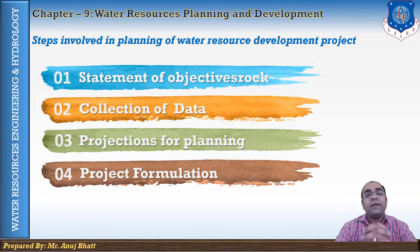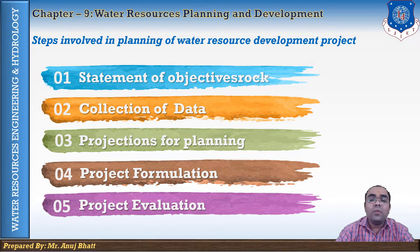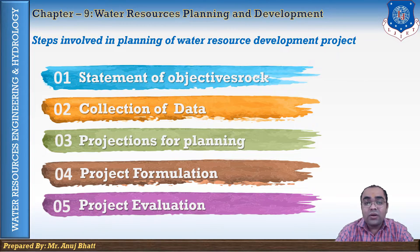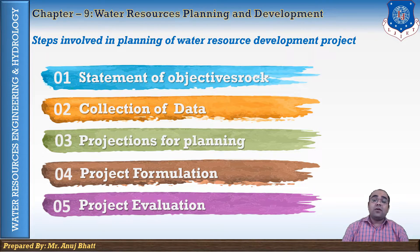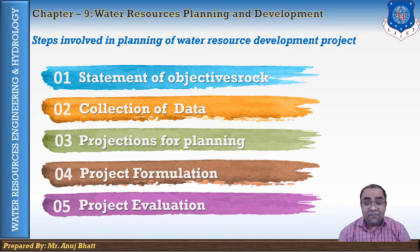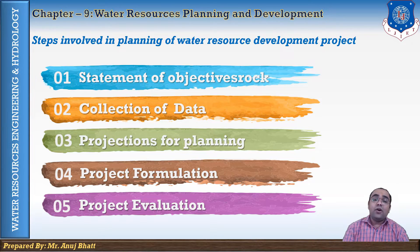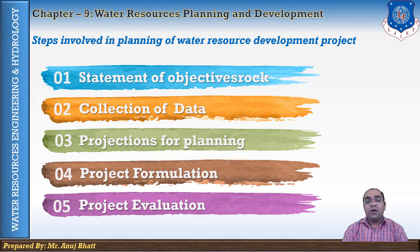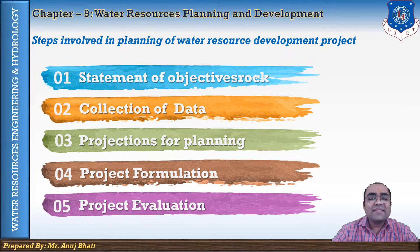The fifth step is project evaluation. To select the unit or combination of units which is economically most efficient, this step is mandated. If the most efficient unit has a benefit-cost ratio greater than one or any other specified minimum value, the unit may be recommended for construction. If an alternative individual unit is completely independent — both physically and economically — from all other units, it may be evaluated alone.